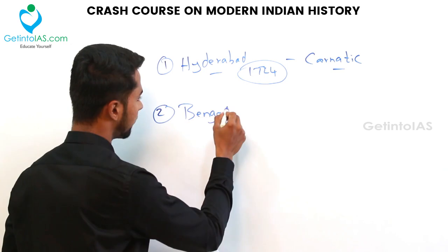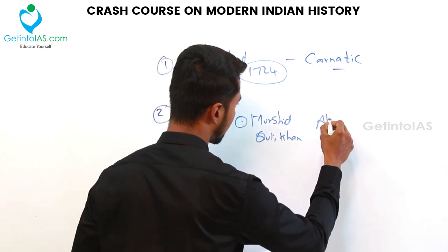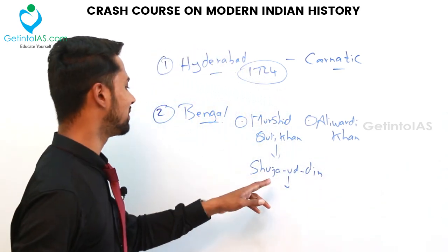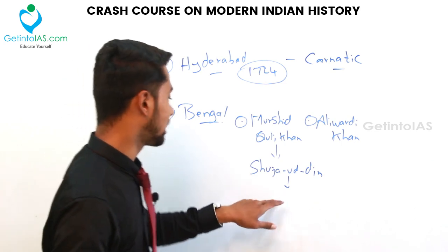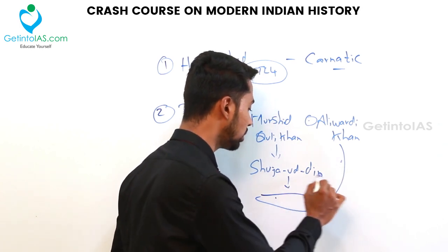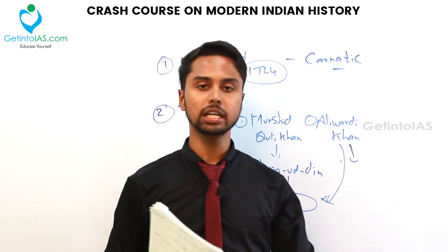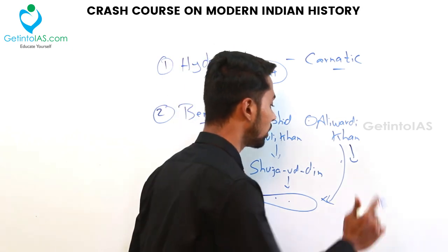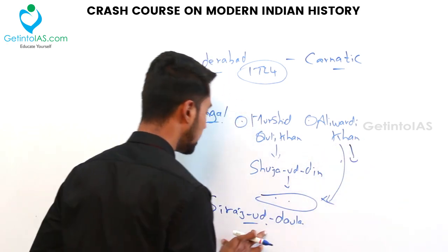An important autonomous state was Bengal, founded by two personalities: Murshid Quli Khan and Alivardi Khan. Murshid Quli Khan was followed by Shuja-ud-Din, who ruled till 1739. Shuja-ud-Din's son Sarfaraz Khan was killed by Alivardi Khan, who then ascended the throne. Alivardi Khan managed his relationship with the British to some extent, but he was ultimately followed by an important personality called Siraj-ud-Daulah as the Nawab of Bengal.